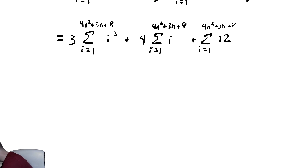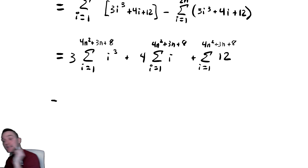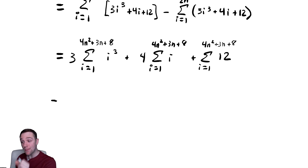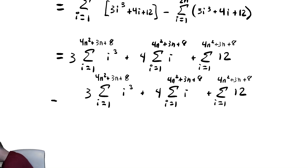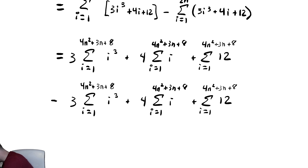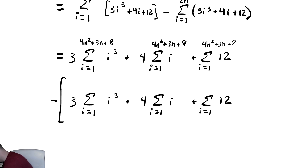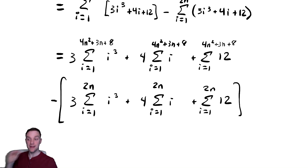Now we need to subtract the second summation. We're going to exploit copy-paste here because it's going to be the exact same algebra, but the top bound changes. So we copy the structure and simply change all of the top bounds to 2n instead — 2n, 2n, and 2n.